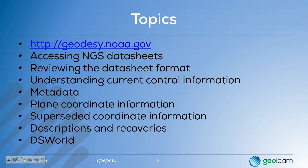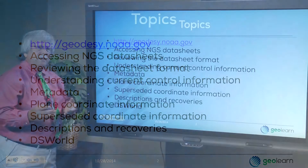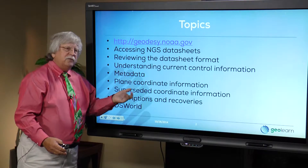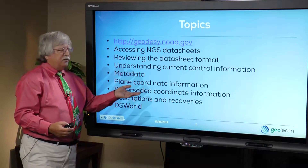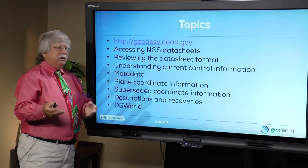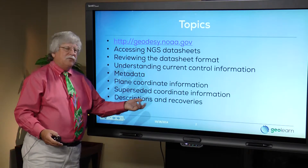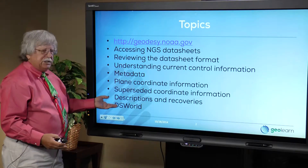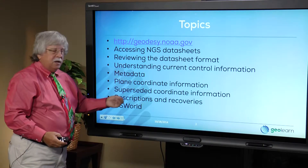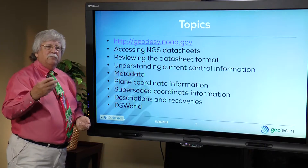We're going to look at the various data elements, and the current control information — because that's what most surveyors are concerned with: what is the latest and greatest control. We're going to talk about the metadata; NGS goes to great lengths to provide sufficient metadata so you can have confidence in what each data element means. I'll show you where you find the plane coordinate information, talk about superseded coordinate information — older values on NAD 27 or height values on NGVD 29 — descriptions and recoveries, and the tool DS World, which you can use to update recoveries, add digital images, and add improved coordinate information for benchmarks that currently only have a scaled value.